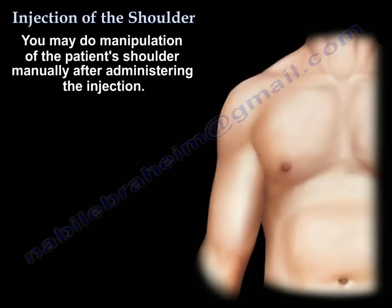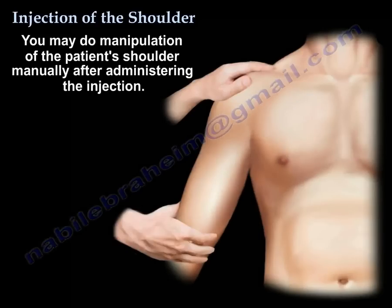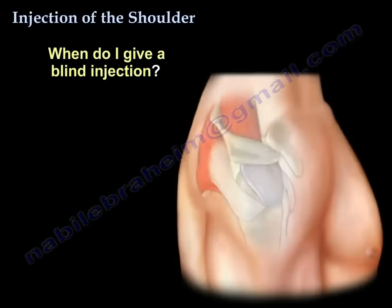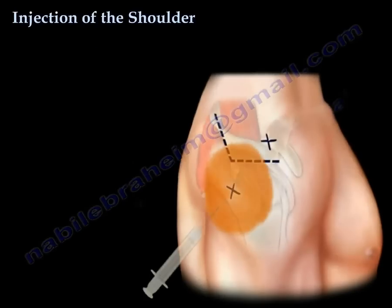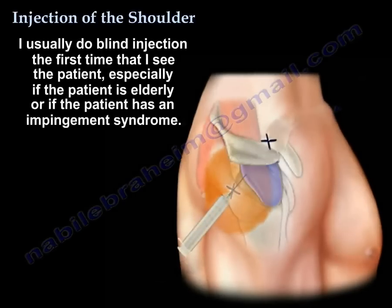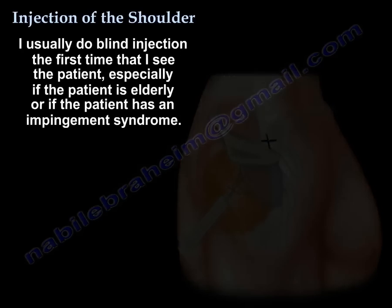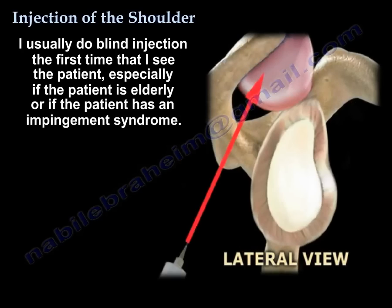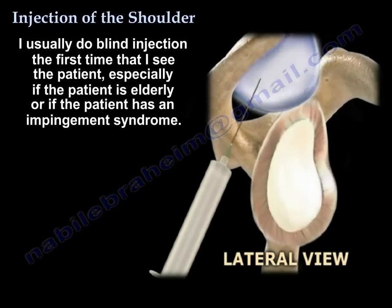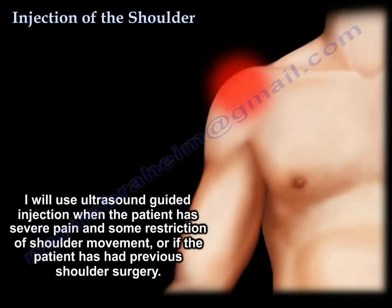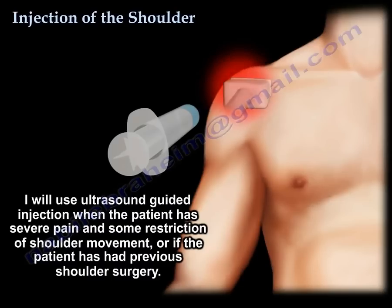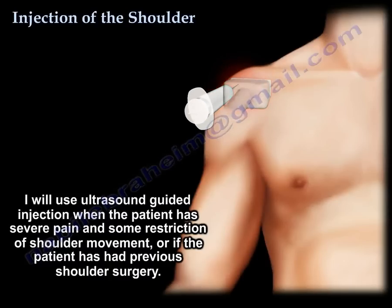You could do manipulation of the shoulder manually while the patient is in the office after you finish the injection. So when do I do the blind injection? Usually the first time I see the patient, especially if the patient is elderly or has impingement syndrome. I will use ultrasound when the patient has severe pain and some restriction of movement, or the patient has had previous shoulder surgery.